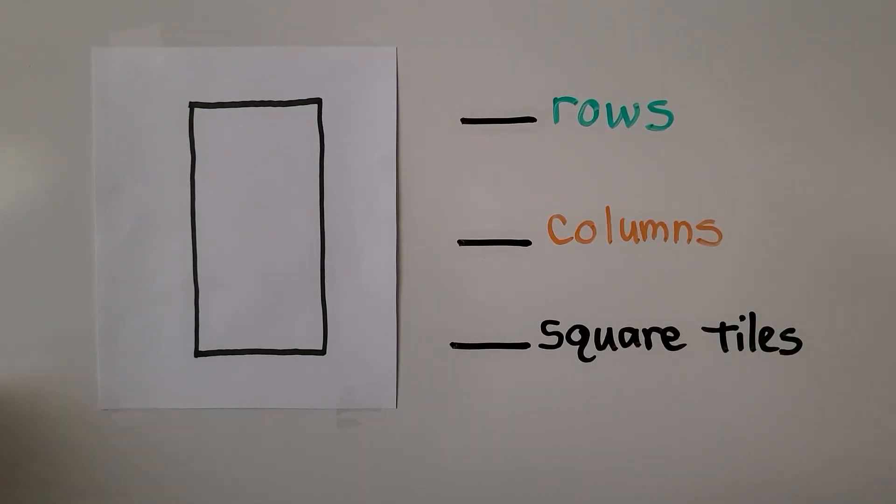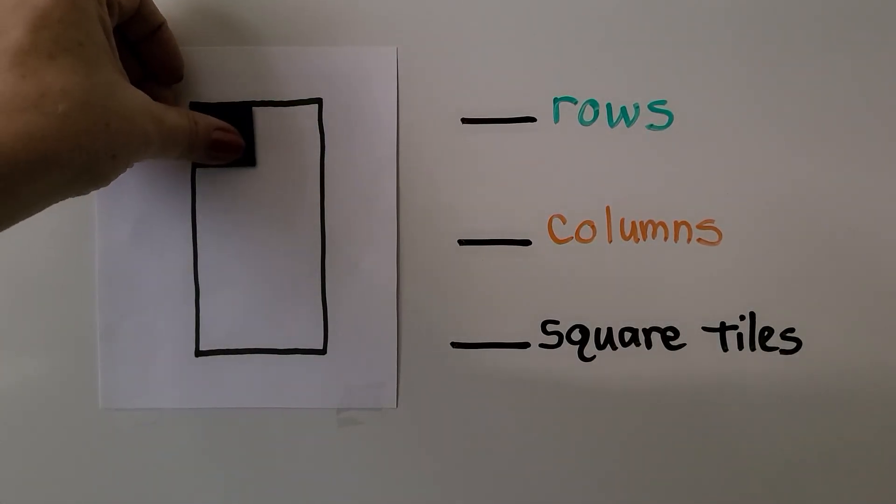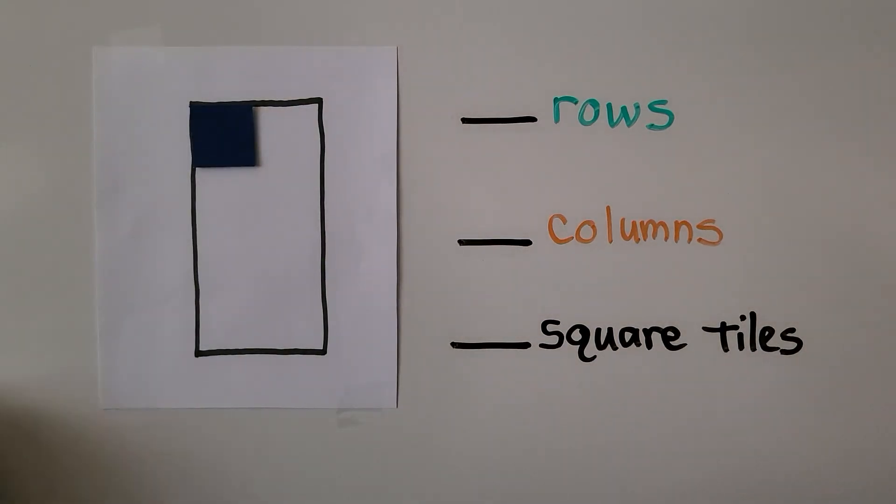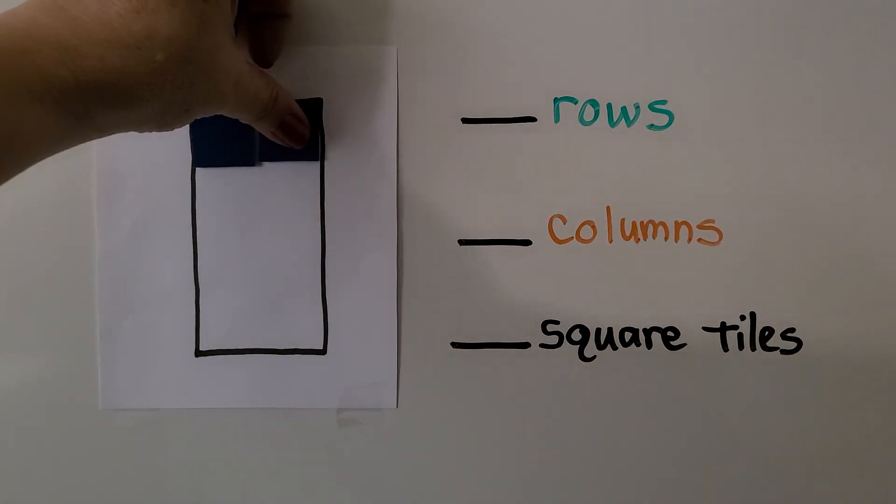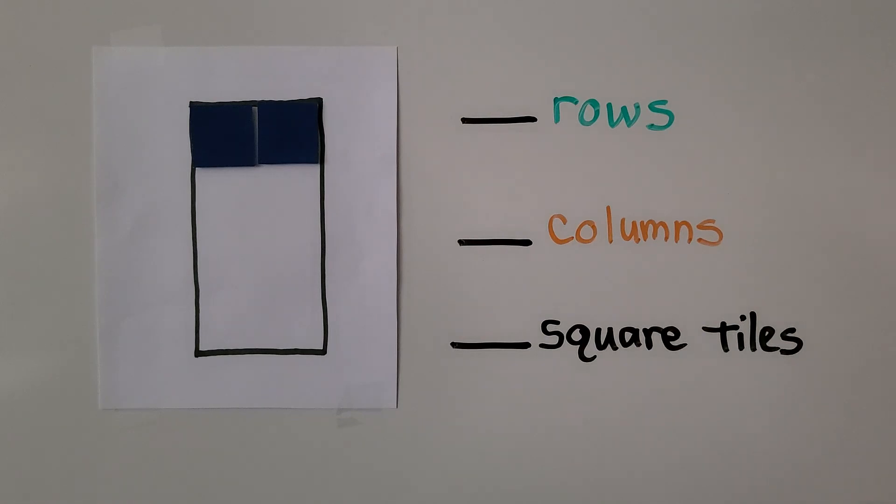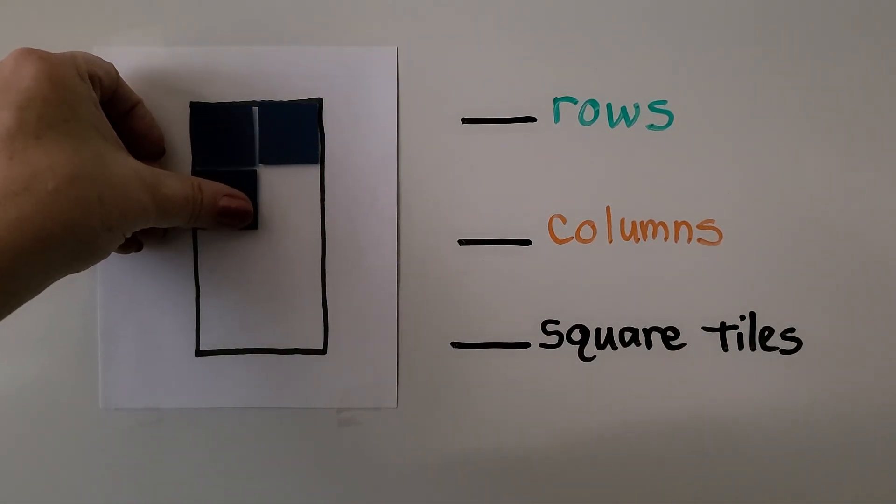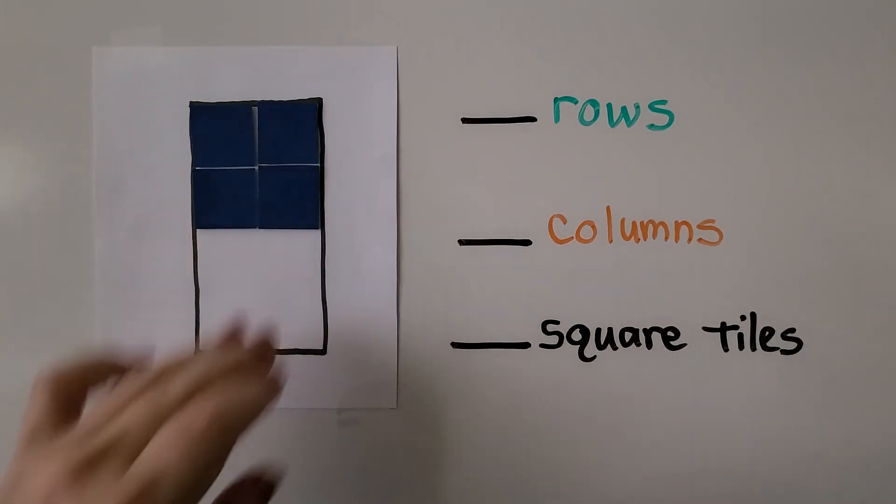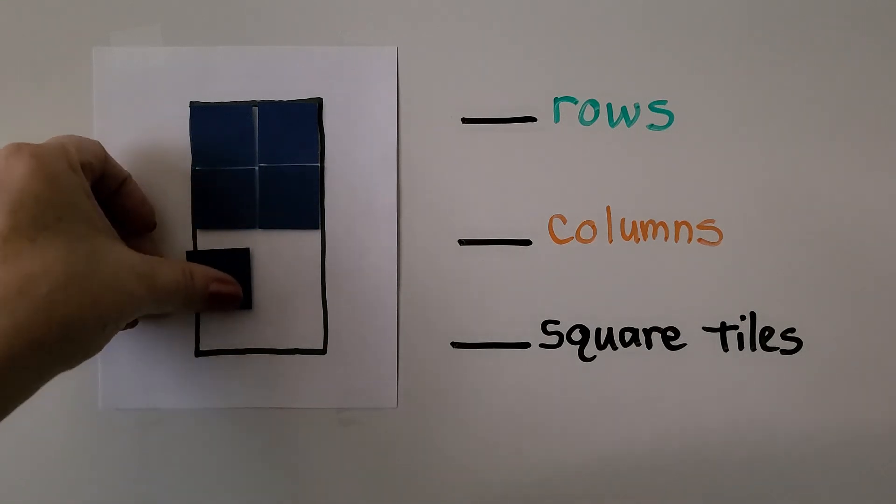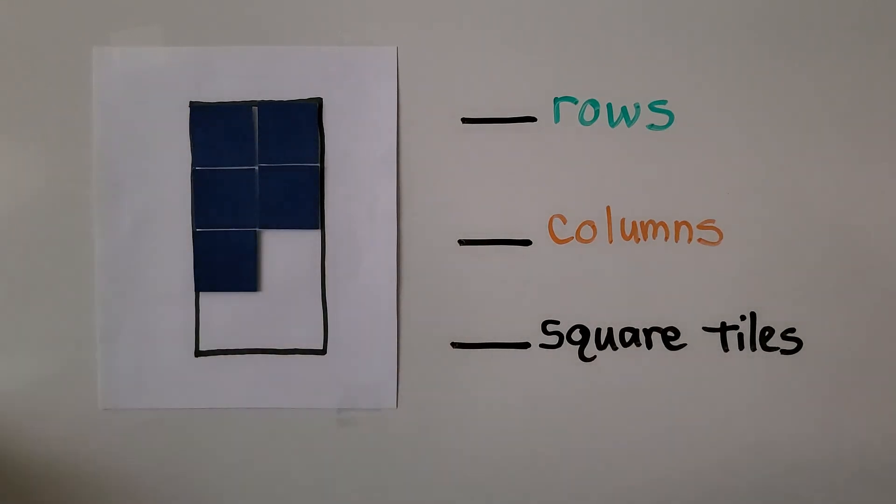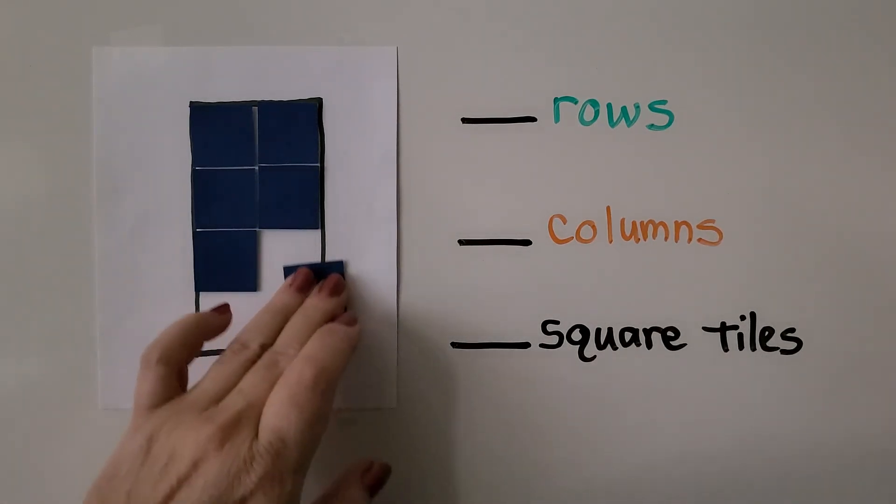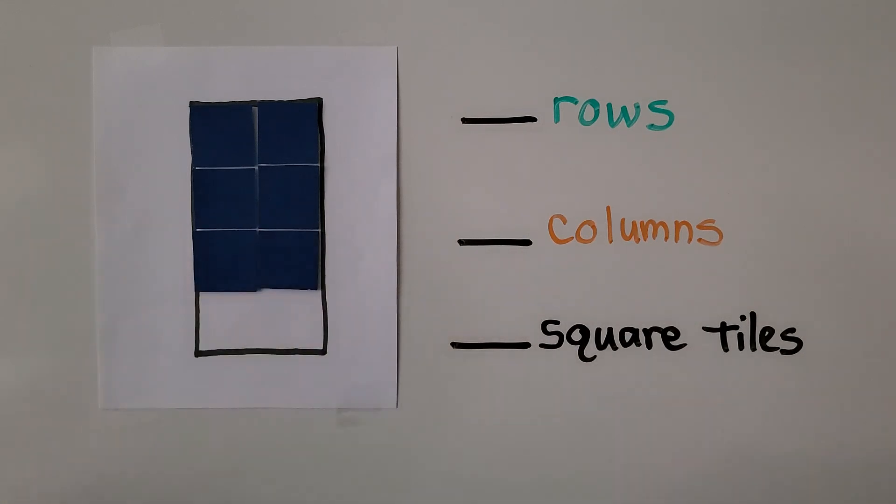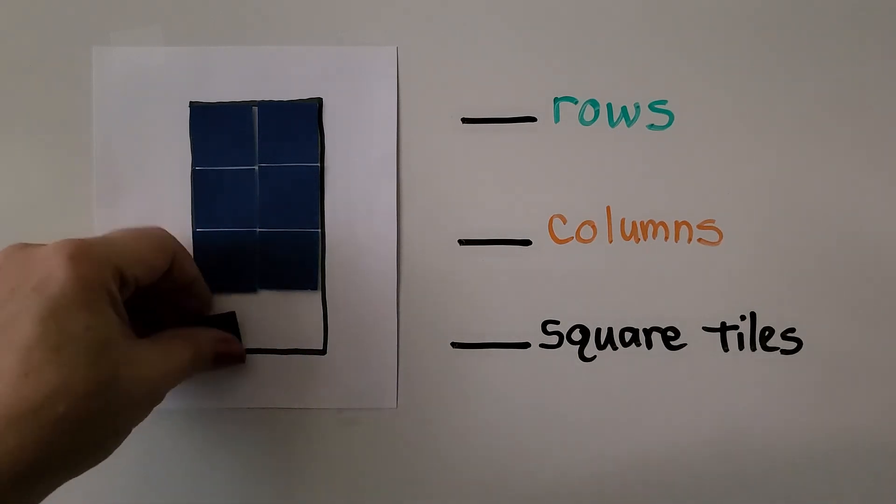Again, we start by putting one in the top corner like that. That's 4. We can put another, start another row. We can fit 2 in that row. We can start another row and fit 2 in that row. We have room for one more row, don't we?